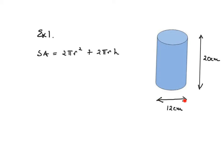Now we have the base diameter so we need to half that. The base radius is 12 over 2 which is 6 centimeters, so we can put all these numbers straight into the formula. It's going to be 2 times π times 6², plus 2 times π times 6 times 20.